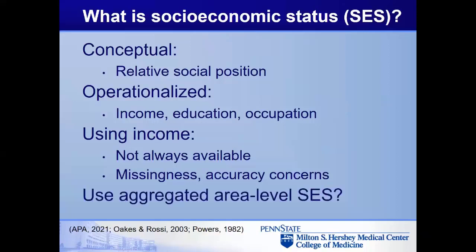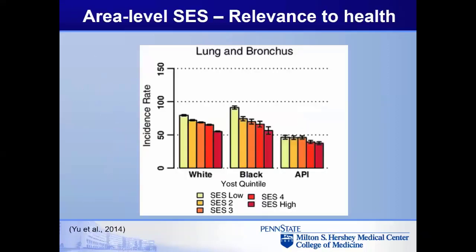To address those issues, some scientists use aggregated measures of socioeconomic status for a given geographic unit — a census tract, county, or census block — and we see results broadly consistent with individual-level SES variables. Here's an example from a few years ago looking at a census tract index combining multiple indicators of socioeconomic status, which was related to lung and bronchus cancer incidence. Across different race groups, if you lived in a census tract with higher socioeconomic status, you were less likely to be diagnosed with lung cancer.